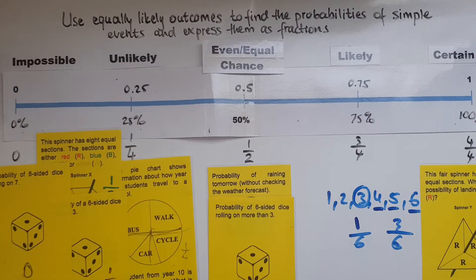So we've expressed probability as a fraction, simple events, and we've written them as fractions. That kind of helps you place them on the scale as well.